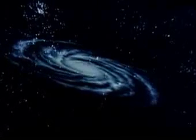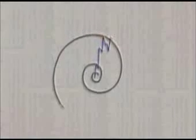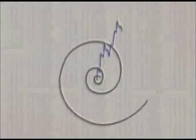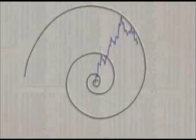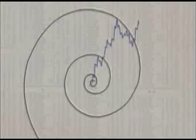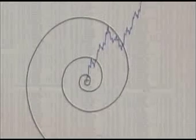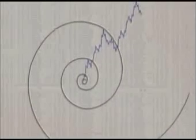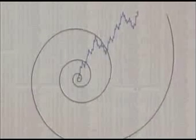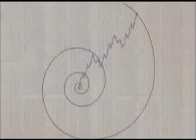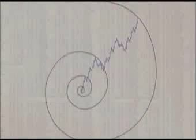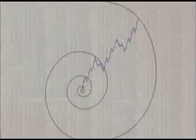So how do these spirals connect to socionomics? The idealized depiction of the stock market's progress can be seen as a spiral. The top of each successive wave of one higher degree serves as a touchpoint for the exponential expansion, and pretty soon it begins to look like the pattern of a hurricane or galaxy.